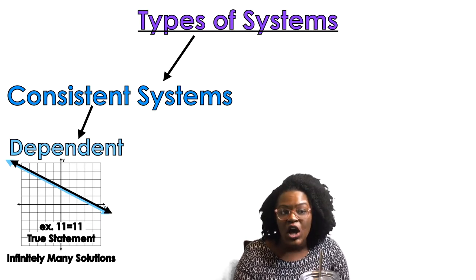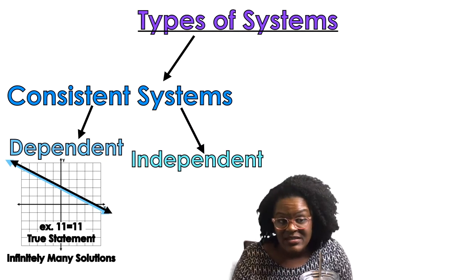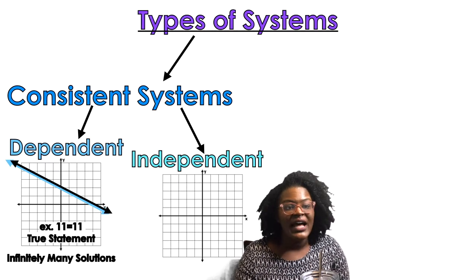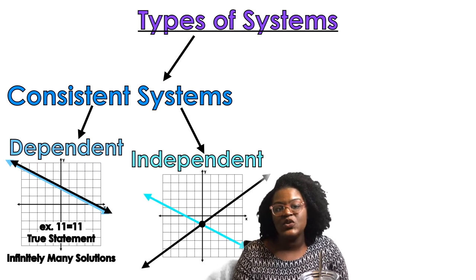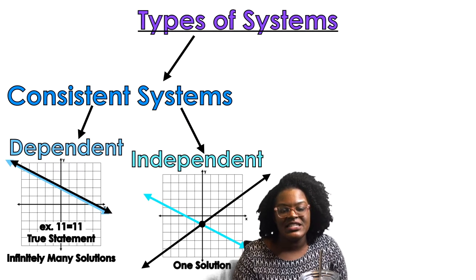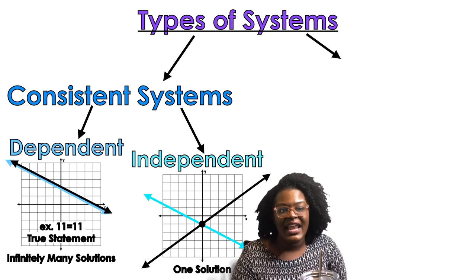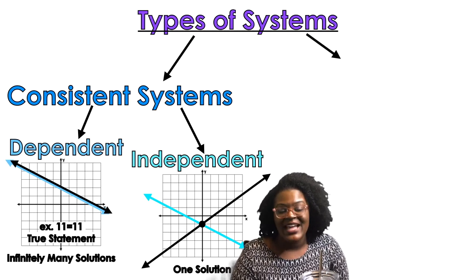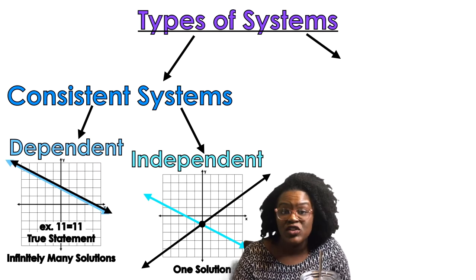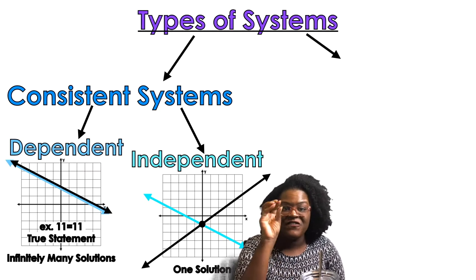You can also have a consistent system that is independent. If you have a consistent system that is independent, that means you have two lines that cross and touch at exactly one solution. You call that system consistent because it has a solution — and if it's independent, then it is one fixed solution.